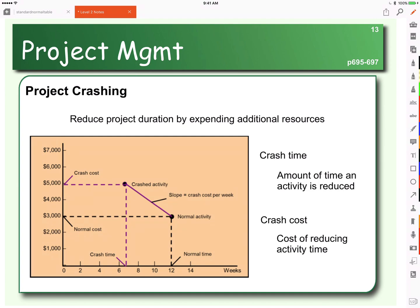Project crashing is where you reduce the duration of the project, so we shorten the project, and that's going to cost us money. We're going to have to pay overtime, we may have to rush the delivery of things. So we need to look at the crash time - how much time can we reduce an activity? And the crash cost - what would it cost to reduce the time it takes to complete those activities?